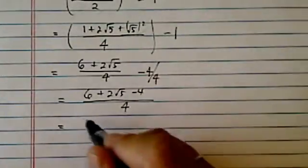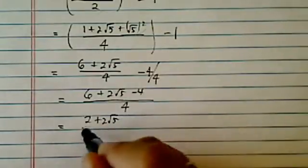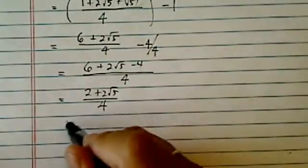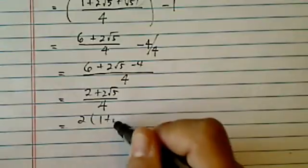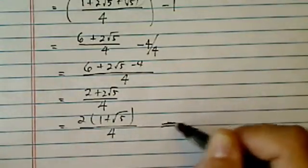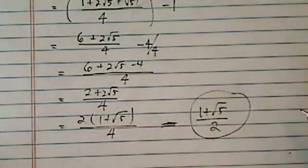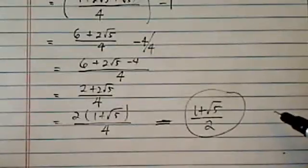And, well, behold, what do you know? We actually have 2 plus 2 radical 5 over 4. Let's pull the 2 out. 1 plus radical 5 over 4. And this one is actually equal to 1 plus radical 5 over 2. And this one is actually golden ratio.